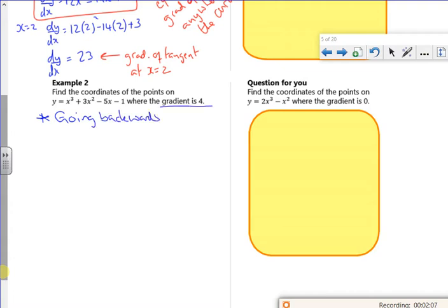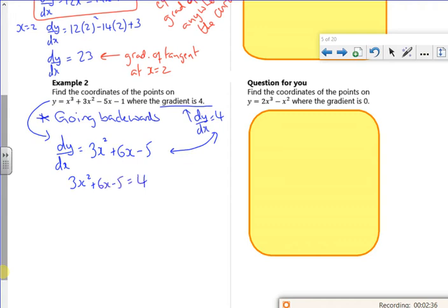It's told you that dy by dx is 4, and you need to find out what x value fits in. So if I differentiate this, so I've got 3x squared. I've got 3 times 2x, that's just 6x, and then minus 5. And I'm saying that these two are the same. So I'm saying that 3x squared plus 6x minus 5 is the same as 4.